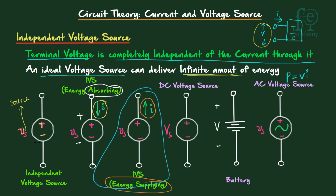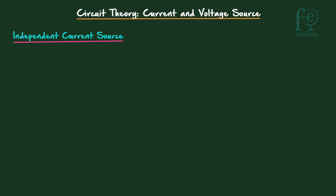This symbol is a good approximation of the independent voltage source. If the voltage is not varying with respect to time — that is, it is constant — we represent it with capital Vs and call it a DC voltage source. The battery symbol uses a capital Vs with long and short lines representing positive and negative plates. For an AC voltage source, we mark a sine wave inside the circle.